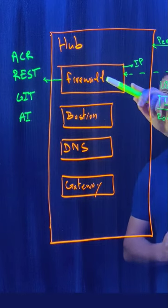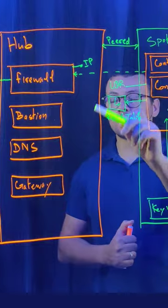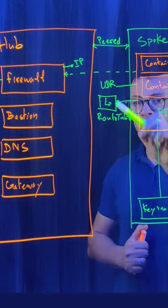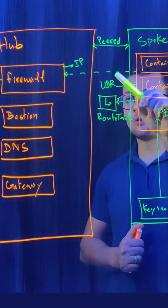You can achieve this by using UDR mode within container apps and a route table that forces all egress traffic through the private IP address of the firewall. Your container apps can then connect to other Azure resources.